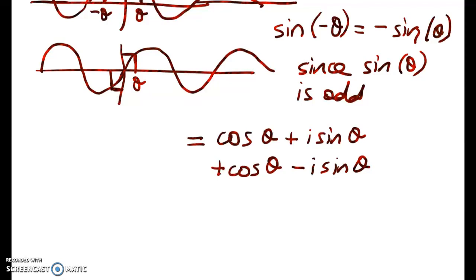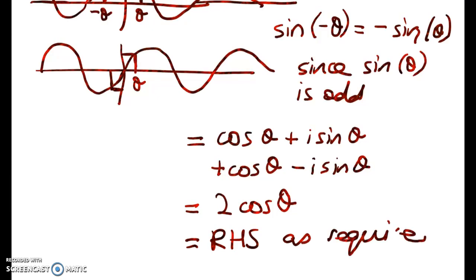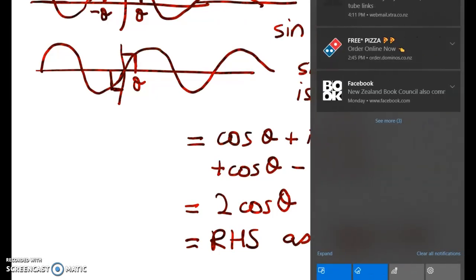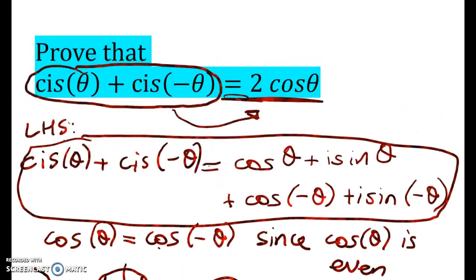So by using the properties of odd and even functions, we've shown that the left-hand side is equal to 2 cos theta, which is the right-hand side as required. We've proved that this can be simplified to 2 cos theta. So we've gone from two complex numbers to one real number.